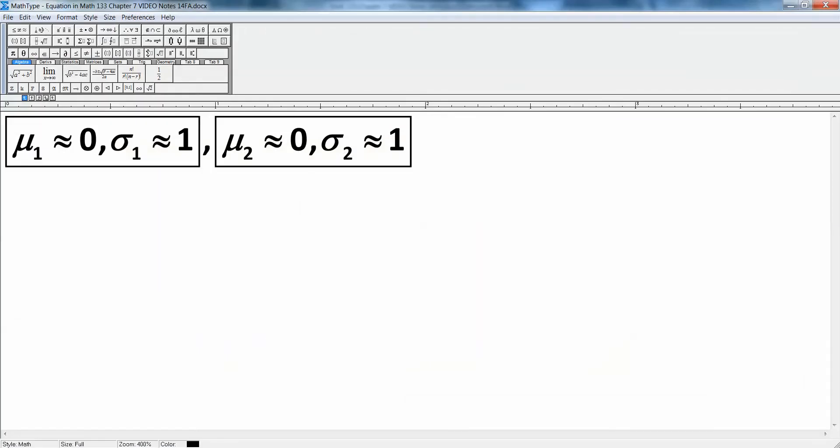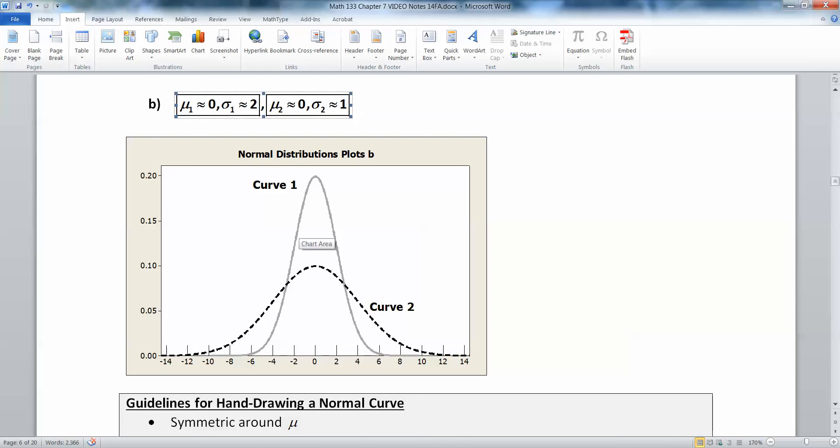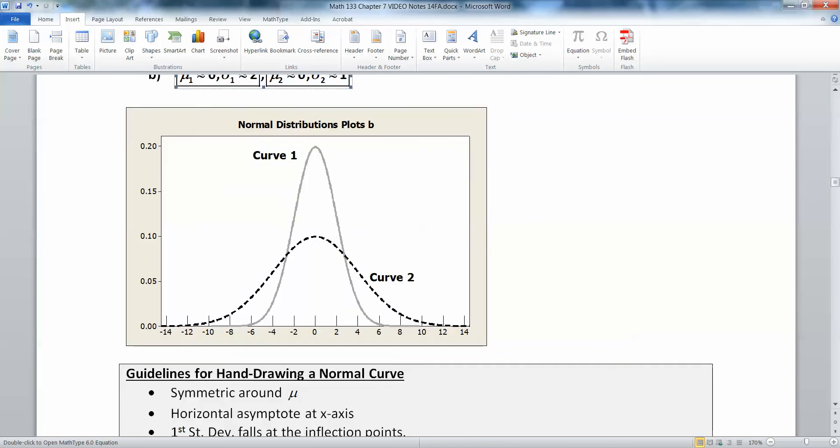Now curve 1 looks like the inflection point is happening right about where my cursor is. That's about 2. So again, how am I eyeballing that? Well, it's an art. But really what you're doing is you're looking for where up here at the top of the peak, it's kind of bowl-shaped down, concave down. And over here at the tails, it's concave up. So somewhere in the middle, it switches.